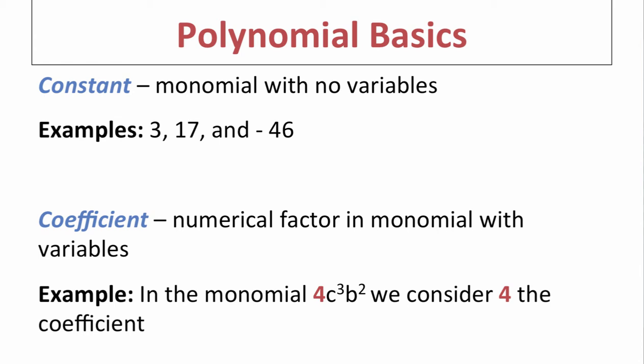Coefficients are numerical factors in a monomial with variables. If you have variables involved, the number in the very front is the coefficient. For example, in 4c to the third b to the second, the four is the coefficient. If there is no value in front of your variable, remember the number that's always there is one.